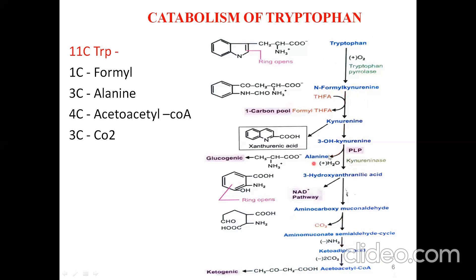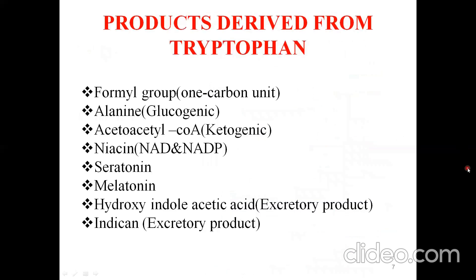Of the 11 carbons in tryptophan: one carbon is removed as the formyl group, three carbons as alanine, four carbons as acetoacetyl-CoA (a ketogenic compound), and three carbons as carbon dioxide. The products derived from tryptophan include the one-carbon formyl unit entering the one-carbon pool, glucogenic alanine, and ketogenic acetoacetyl-CoA.